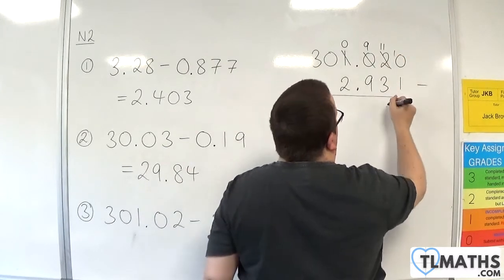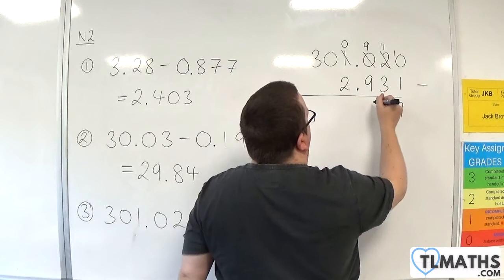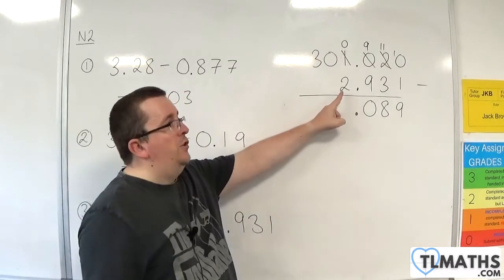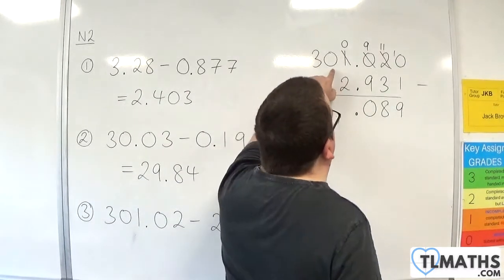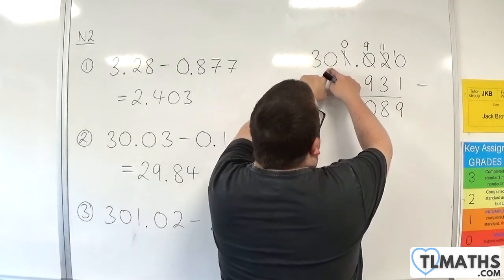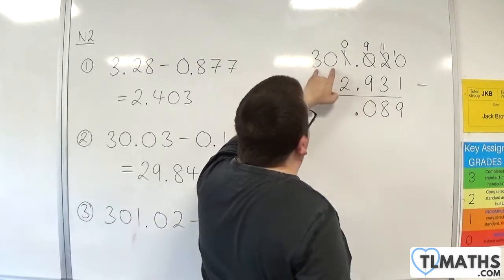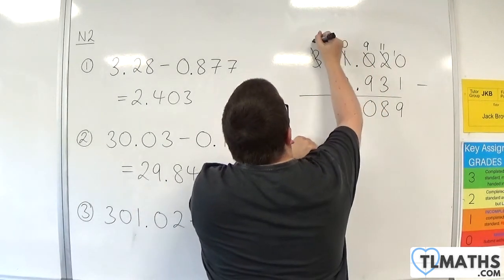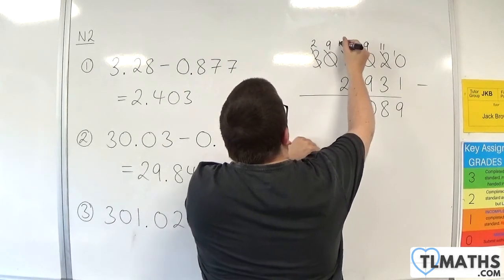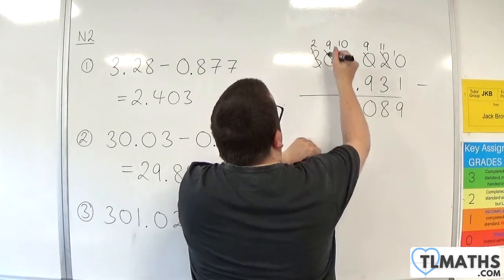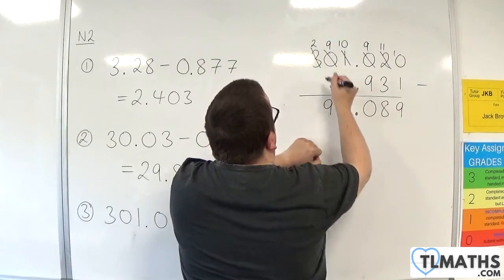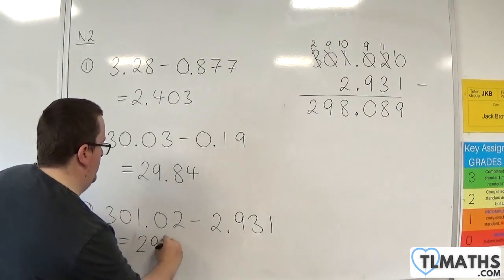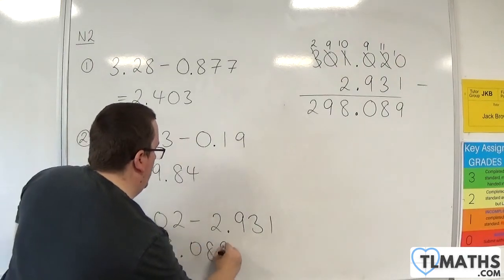11 take away 3 is 8. 9 take away 9 is 0. Bring the decimal point down. 0 take away 2, I can't do, so I'm going to need to borrow. Now 0 has none to lend me, so I now need to think about 30 and borrowing 1 from 30. So 30 becomes 29, and I've borrowed 1, so I now have 10 take away 2, which is 8. 9 take away nothing is 9. 2 take away nothing is 2. So I end up with 298.089.